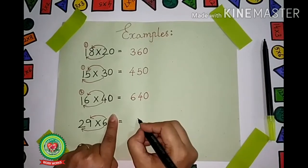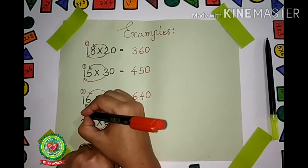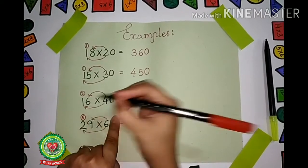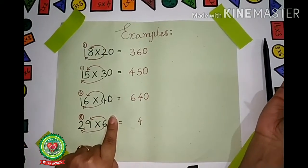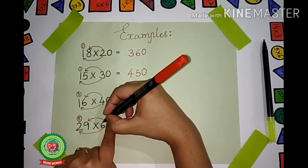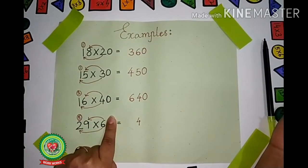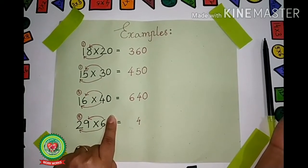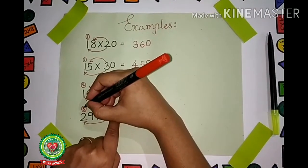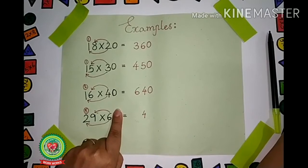Write 4 over here and 5 carry. Now we have to multiply 6 with 2. 6 × 2 are 12, plus 5 carry. Count 5 after 12: that gives us 17. So we will write 17 over here.